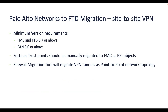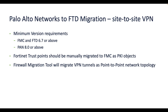For site-to-site VPN migration from Palo Alto to FTD, the target FMC and FTD version should be 6.7 and above, and the source firewall should be 8.0 or above. The VPN tunnels will be migrated as point-to-point network topology, and trust points need to be manually migrated to PKI objects on FMC.